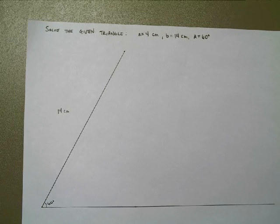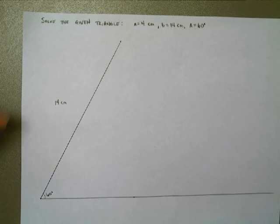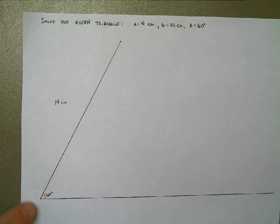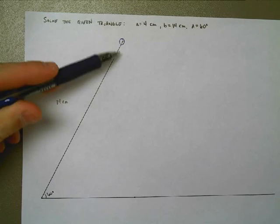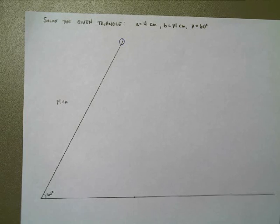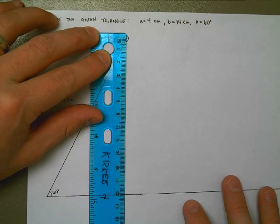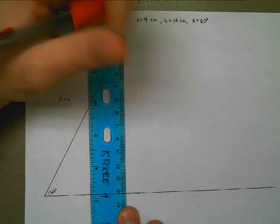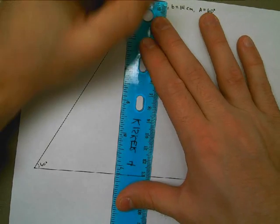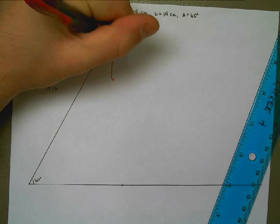The next problem says solve the given triangle with three measurements: a is 4 centimeters, b is 14 centimeters, and angle A is 60 degrees. I drew it out — this one is actually to scale. This length is 14 centimeters, this is a real 60-degree angle using a protractor, and I drew a reference line to find out if this triangle is possible. The line connecting back needs to be 4 centimeters long, but using a ruler, I can't get anywhere close — the best I can do is go straight down at a right angle, and even then I only reach about here.